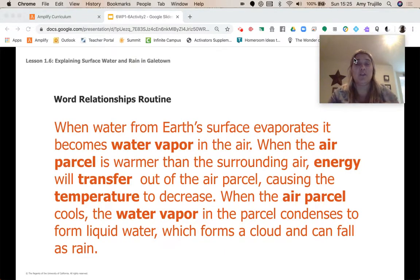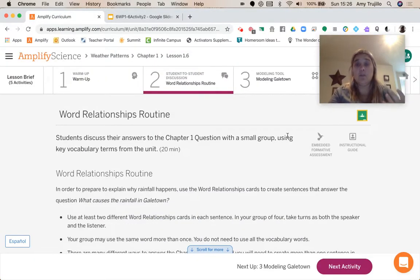So the challenge to use them would look something like this, the final product. When water from the earth's surface evaporates, it becomes water vapor in the air. When the air parcel is warmer than the surrounding air, energy will transfer out of the air parcel, causing the temperature to decrease. When the air parcel cools, the water vapor in the parcel condenses to form liquid water, which forms a cloud and can fall as rain. All right. So we're going to move on to activity number three.